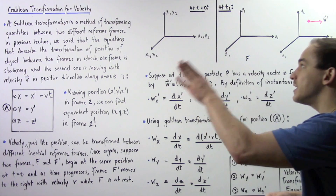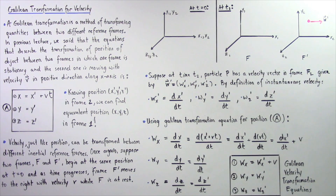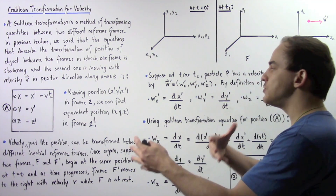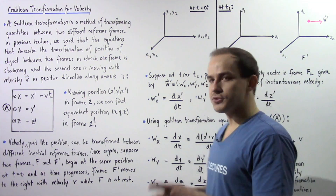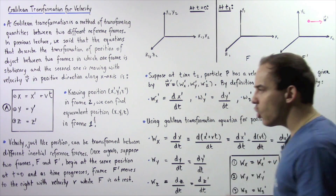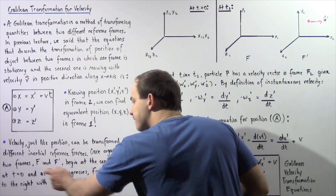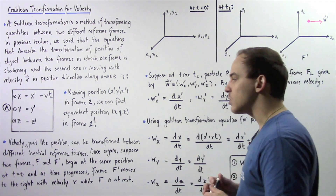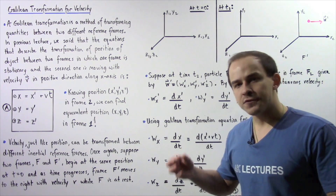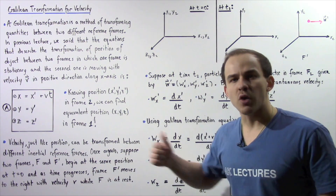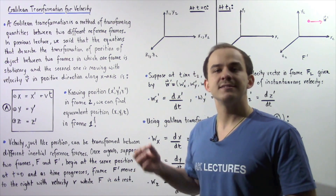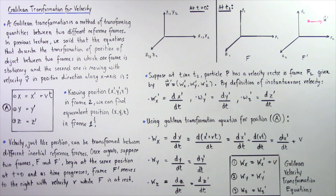Now let's find the Galilean velocity transformation equations — the equations that give us the transformation of velocity between two different reference frames. Suppose two frames, frame f and frame f prime, begin at the same position at t equals 0 seconds. As time progresses, reference frame f prime moves to the right along the x-axis with velocity v, while frame f remains stationary. To see exactly what's taking place, let's look at the following two diagrams.